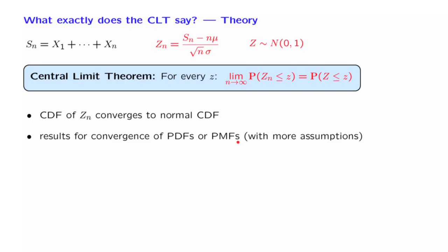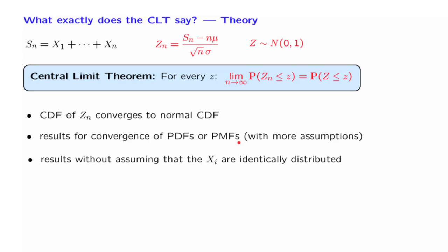Since the result is so general and so important, it might be worth understanding to what extent it can be generalized to other contexts. Our main two assumptions are that the random variables are independent and identically distributed. Can we remove those assumptions? There are versions of the central limit theorem that apply to the case where the Xi's are not identically distributed — one just needs to make certain assumptions on the means and variances of the Xi's.